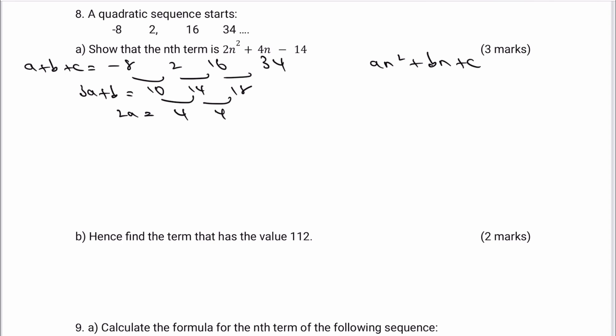If you're not sure about any of this, please do refer to the previous video. We know that 2a equals 4, so therefore a equals 2, giving us the first term 2n squared. For the second term b, using 3a plus b equals 10: that's 3 times 2 plus b equals 10, so b must equal 4, giving us plus 4n.